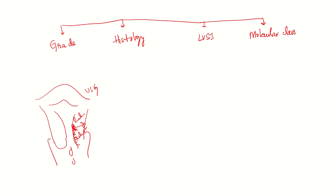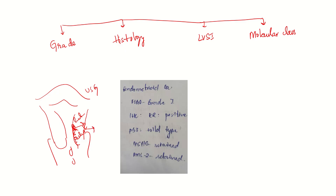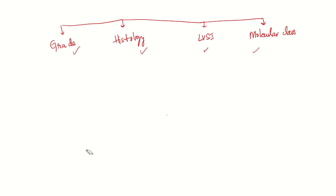We perform an endometrial biopsy and the report mentions grade and molecular classification. P53 is wild type, and MSH and PMS2 are retained. Let's see what this is all about before learning about the staging.